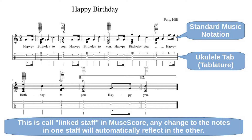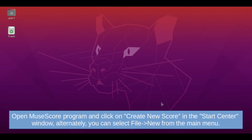The first staff is standard music notation staff and the second staff is ukulele tablature. This is called a linked staff in MuseScore. Any change to the notes in one staff will automatically reflect in the other. Let's try to create this score.